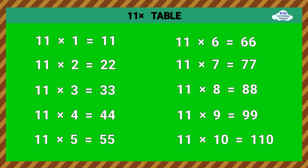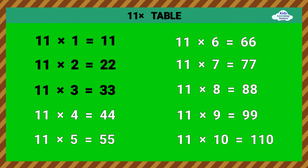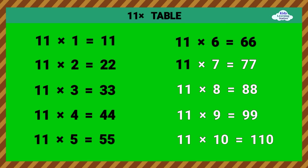11 times table. 11 times 1 equals 11. 11 times 2 equals 22. 11 times 3 equals 33. 11 times 4 equals 44. 11 times 5 equals 55. 11 times 6 equals 66. 11 times 7 equals 77.